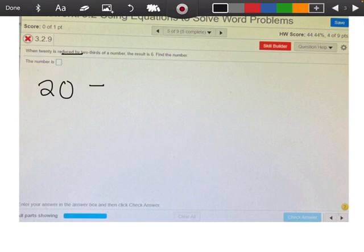Reduced by means we're going to subtract two-thirds of a number, which is two-thirds x. Remember, every time I see the phrase 'a number,' I'm going to write x. The result equals 6.